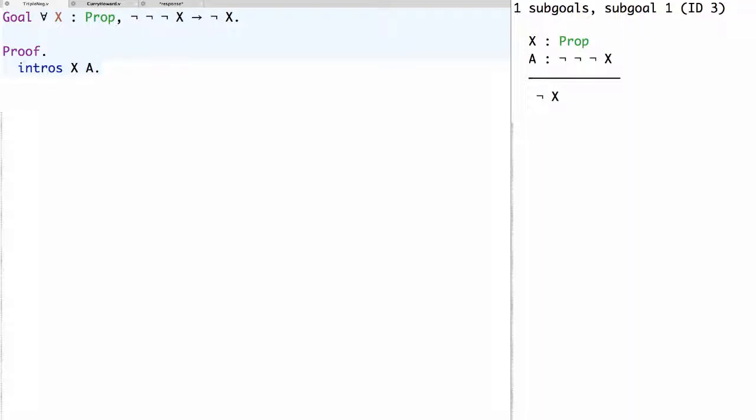Now, note that the claim we need to prove is not x, and this not x is the same up to the definition of negation as x implies false. So this means that we're really trying to prove x implies false, and we can do another intros and introduce the assumption being, which is a proof of x. Now we're trying to prove false.